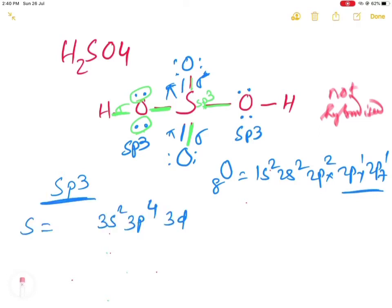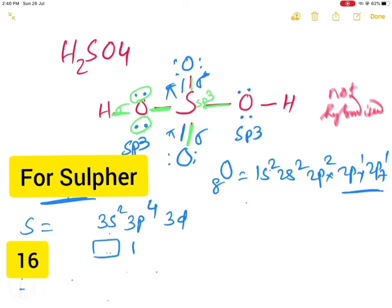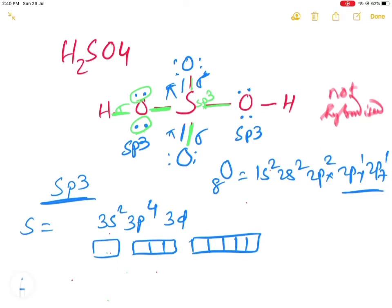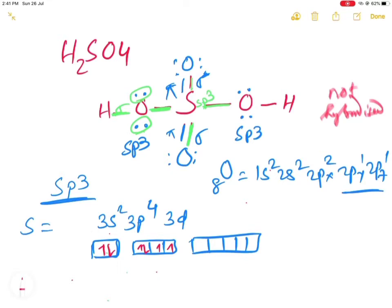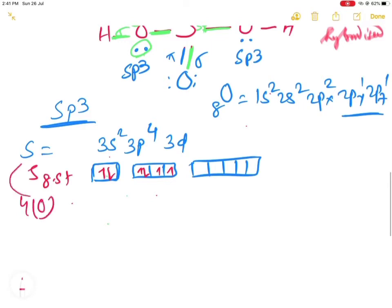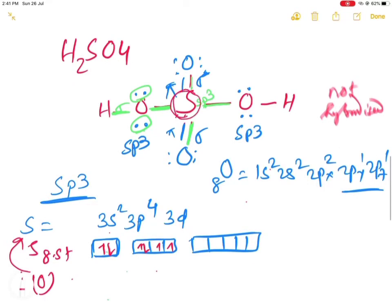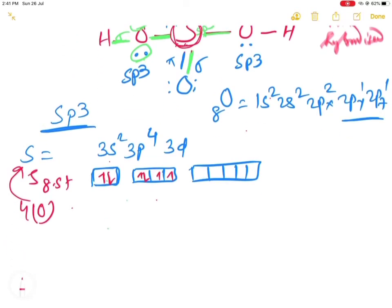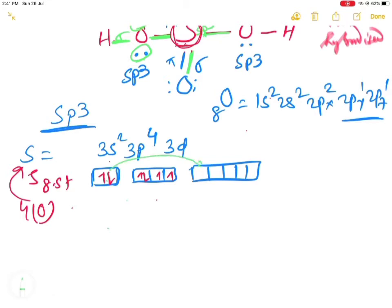Write the boxes for 3s, 3p, and 3d orbitals. 3s has one orbital, 3p has three, and 3d has five. In the ground state of sulfur, 3s has 2 electrons, each p orbital has 1 electron filled then 2, and the d orbitals are vacant. When 4 oxygen atoms approach to form bonds, sulfur goes to an excited state — one s electron jumps to a 3d orbital and one p electron also jumps to a 3d orbital.